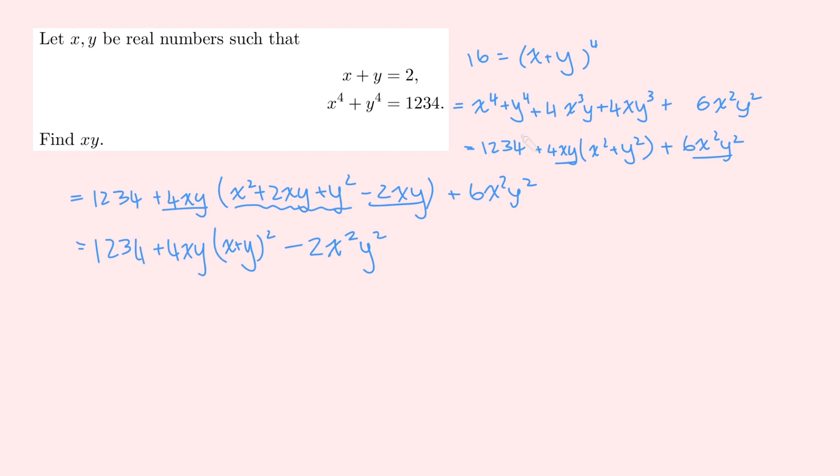So we've got 16, which, remember, is still our left-hand side, equals 1234 plus 4xy times x plus y squared. But we know that x plus y is 2. So this thing here is simply 2 squared, which is 4. And so this is going to become 16xy. And then here we've got 2 lots of xy squared.